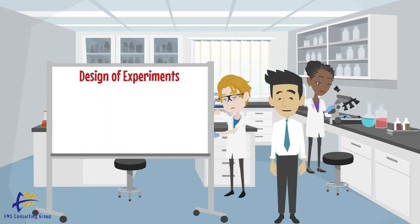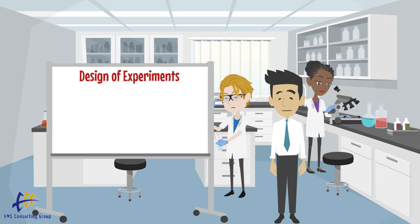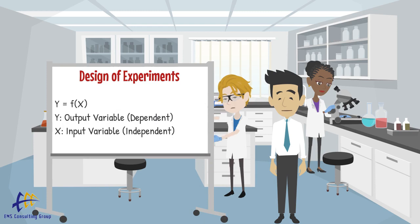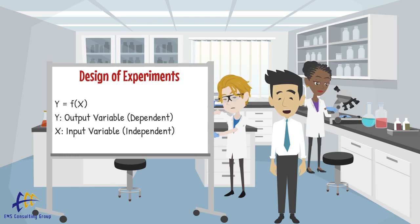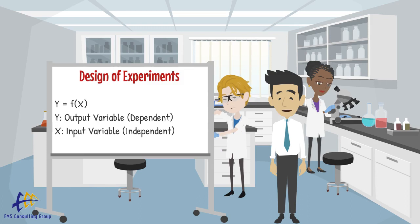When we analyze and improve a process, we often talk about the x and y variables. This sounds a lot like algebra, and it is. The y is the dependent variable — it is our output variable. For example, an output variable might be our defect rate. The x variables are the input variables.